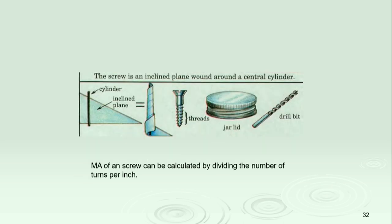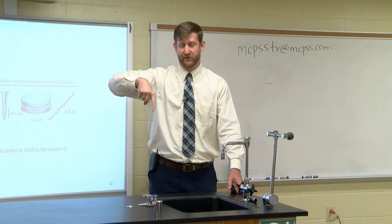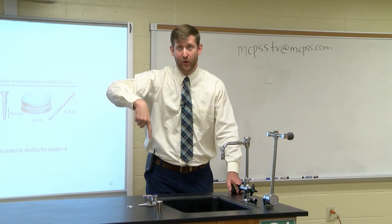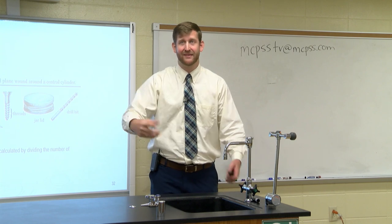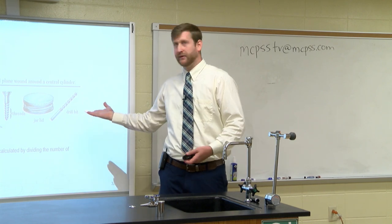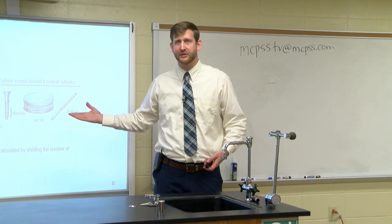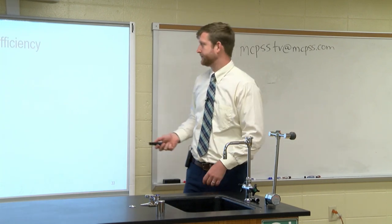The last simple machine is a screw — also a modified version of the incline plane. It's a cylinder with an incline plane wrapped around it, and it uses less force to go through a longer distance, commonly used in construction.